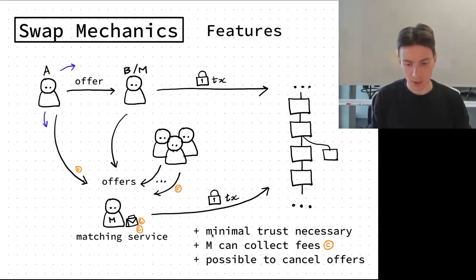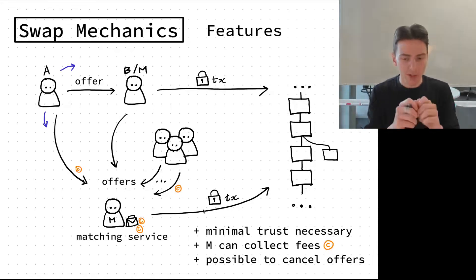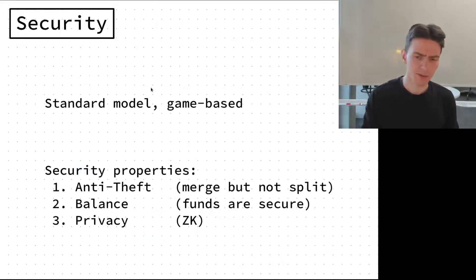We argue informally that this is minimal trust necessary for exchange because you cannot exchange funds without revealing at least the imbalance. The system gives flexibility over how and whom it trusts in exchanging things. Additionally, M can collect fees by adding an additional fee output to the transaction. It is also possible for A and B and other users to cancel offers, so it's quite flexible.